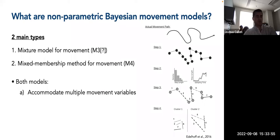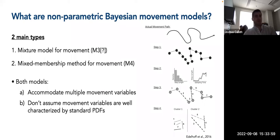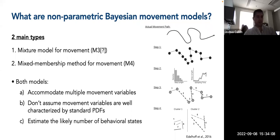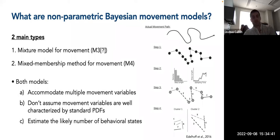Both models are able to accommodate multiple movement variables. They don't assume that movement variables are well characterized by standard probability density functions, although they could be. They're also able to simultaneously estimate the likely number of behavioral states without fitting multiple models — whereas with hidden Markov models, we fit different models with different numbers of states and then use AIC or some other information criteria to perform model selection. This approach tries to account for and remove those issues.